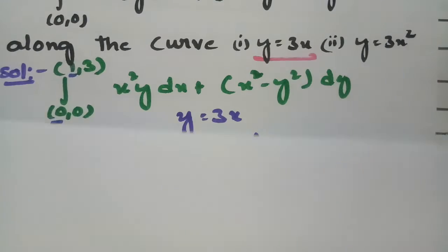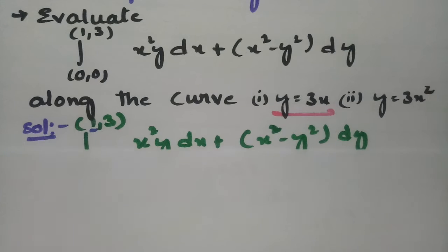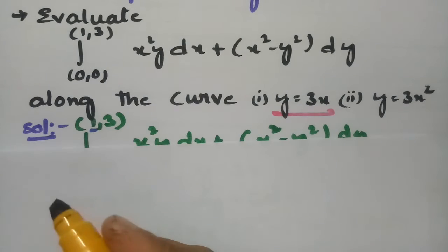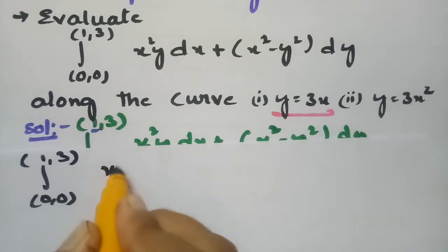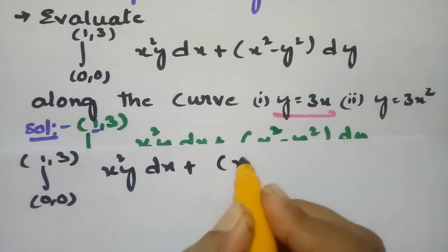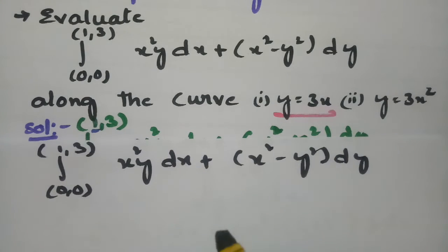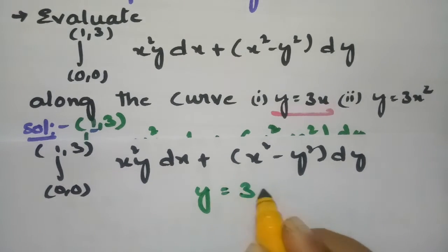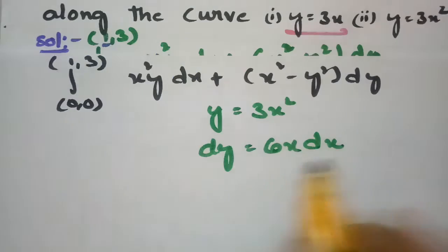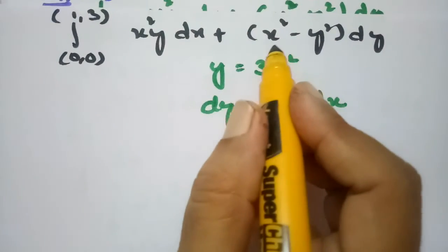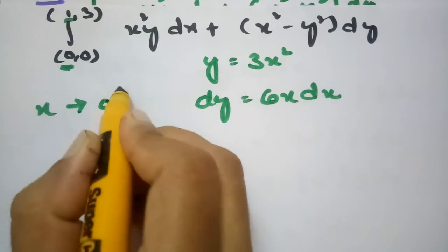Now the second part: we evaluate the same integral from 0 to 1 of 3x²y dx plus (x² minus y²) dy along the curve y equals 3x². Here dy equals 6x dx. I am going to transform each and every term in terms of x, with x varying from 0 to 1.